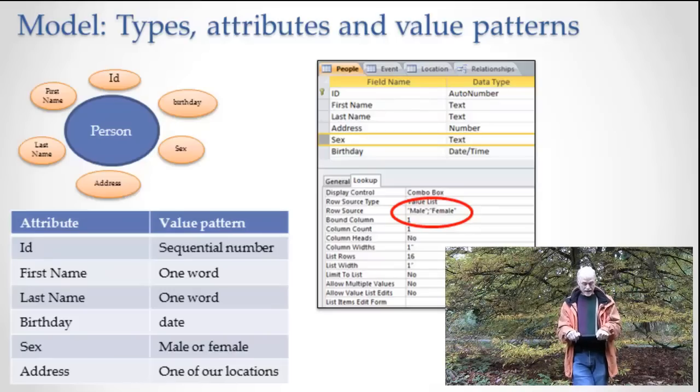The ID is the attribute, and an ID has a particular pattern. In this case, it's a sequential number. Got the idea? Okay, that's where we've been.